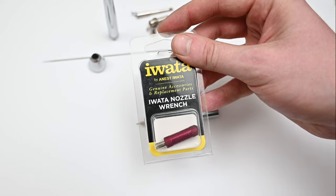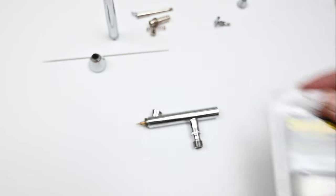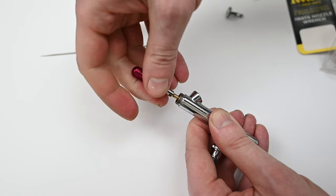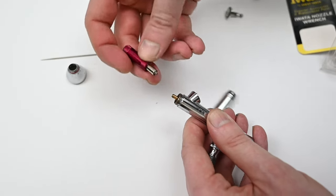This is a small nozzle wrench and it does a great job at holding the nozzle in place as you unscrew it. I'll have a link for this nozzle wrench down below in the video description.